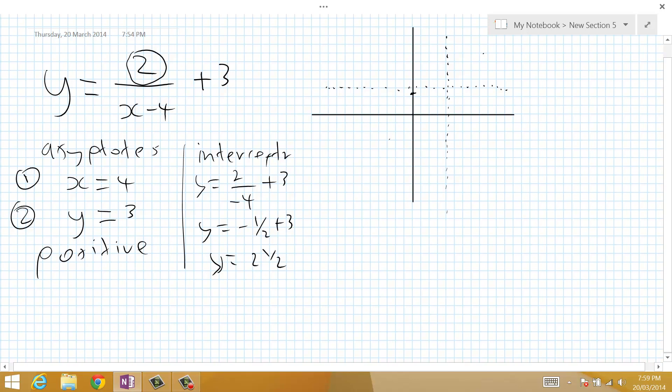We also know that if we want to work out where it cuts the x-axis, we set y equal to 0. This is a slightly more difficult equation. We end up with 0 equals 2 over x minus 4 plus 3.